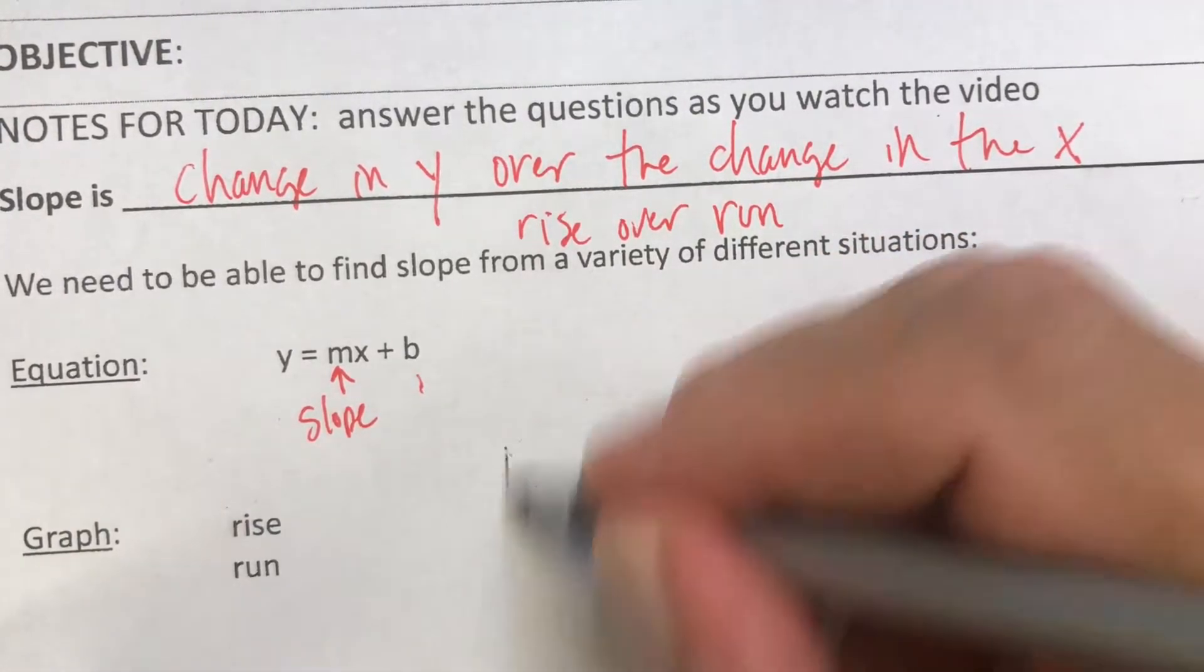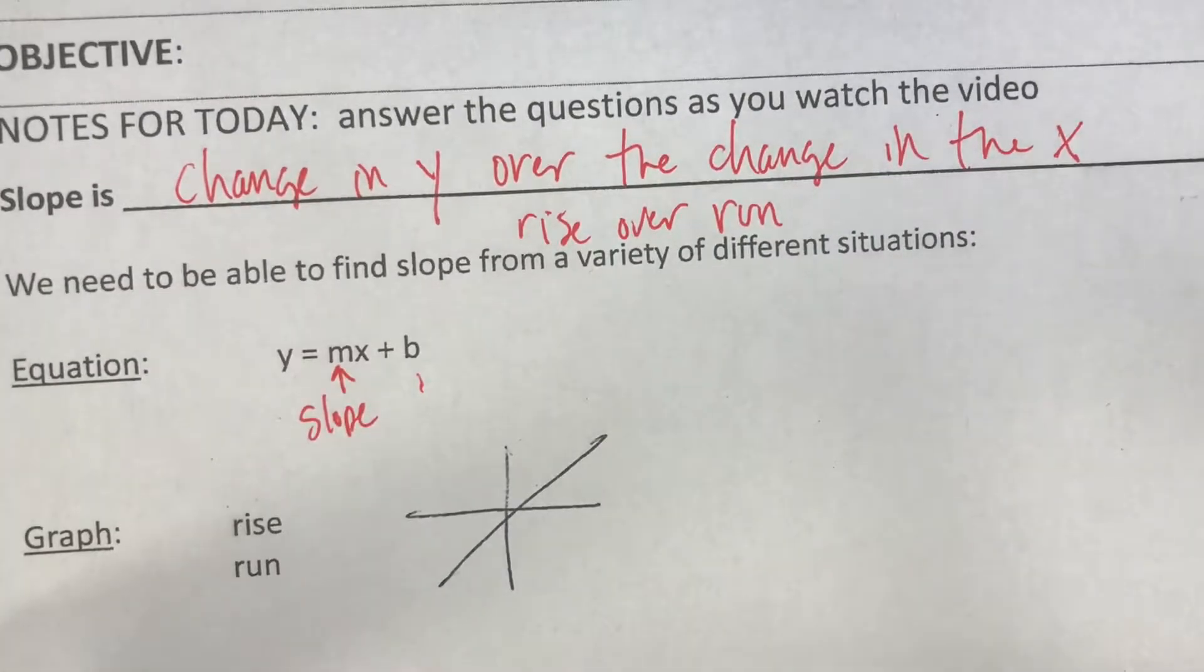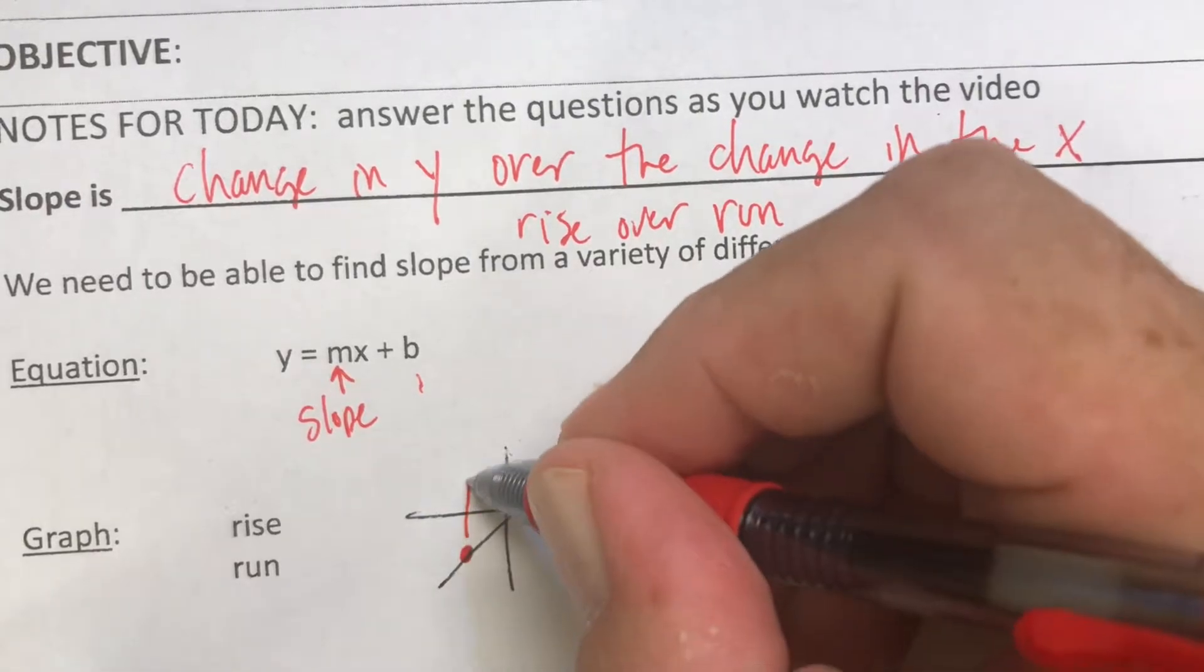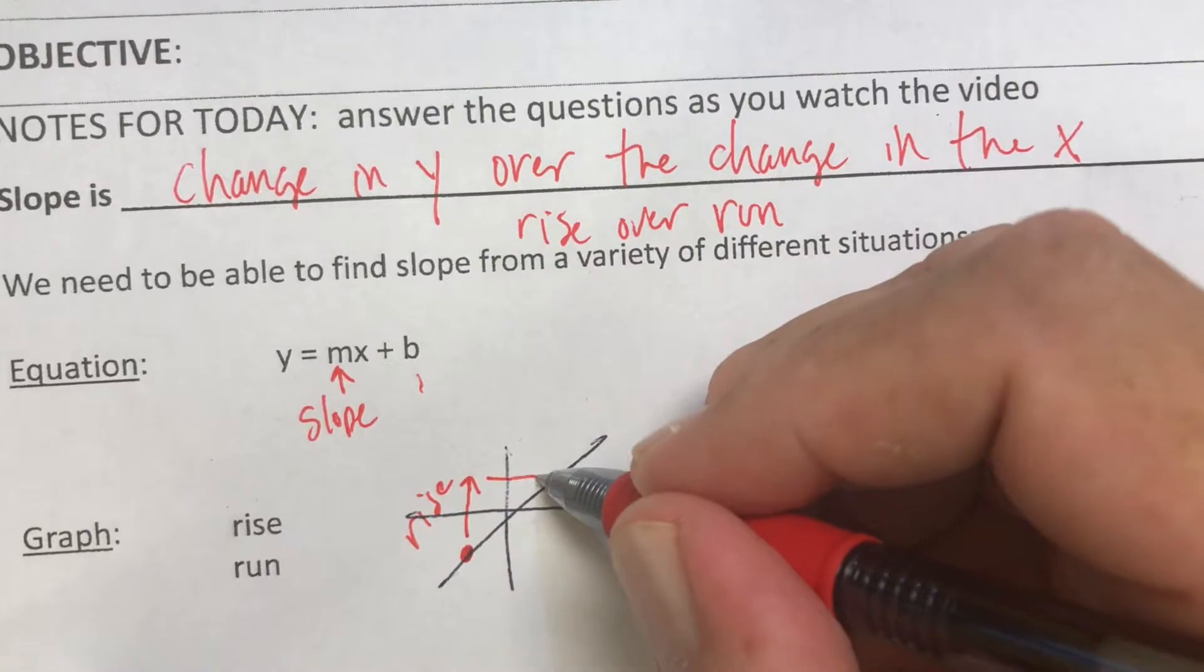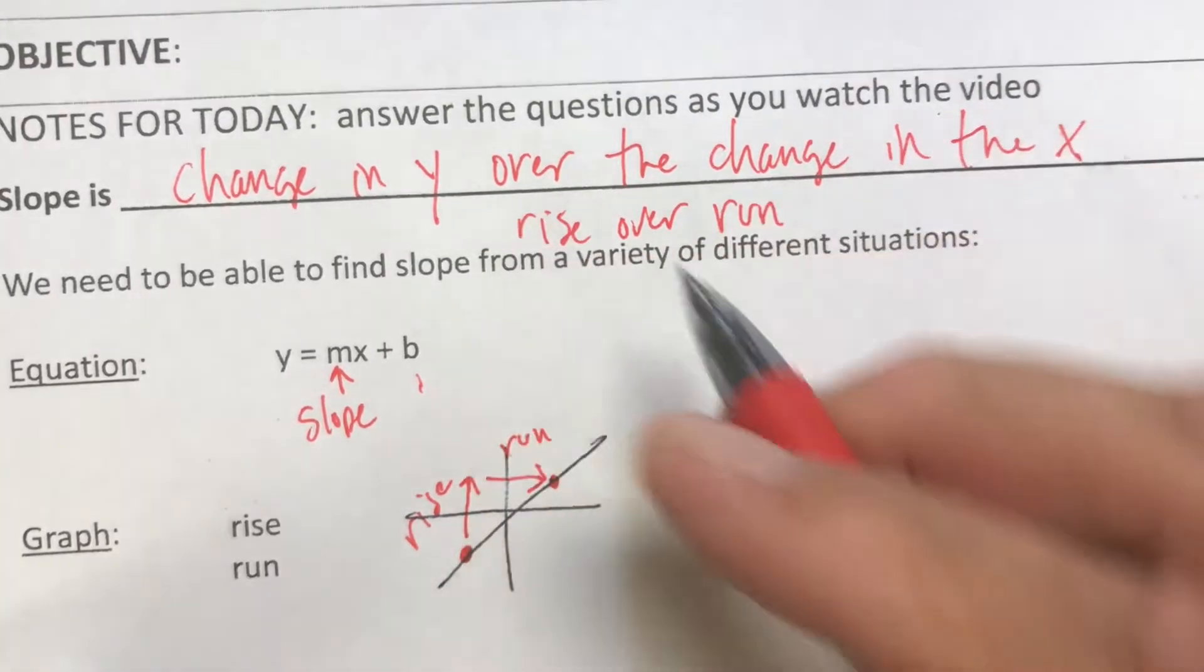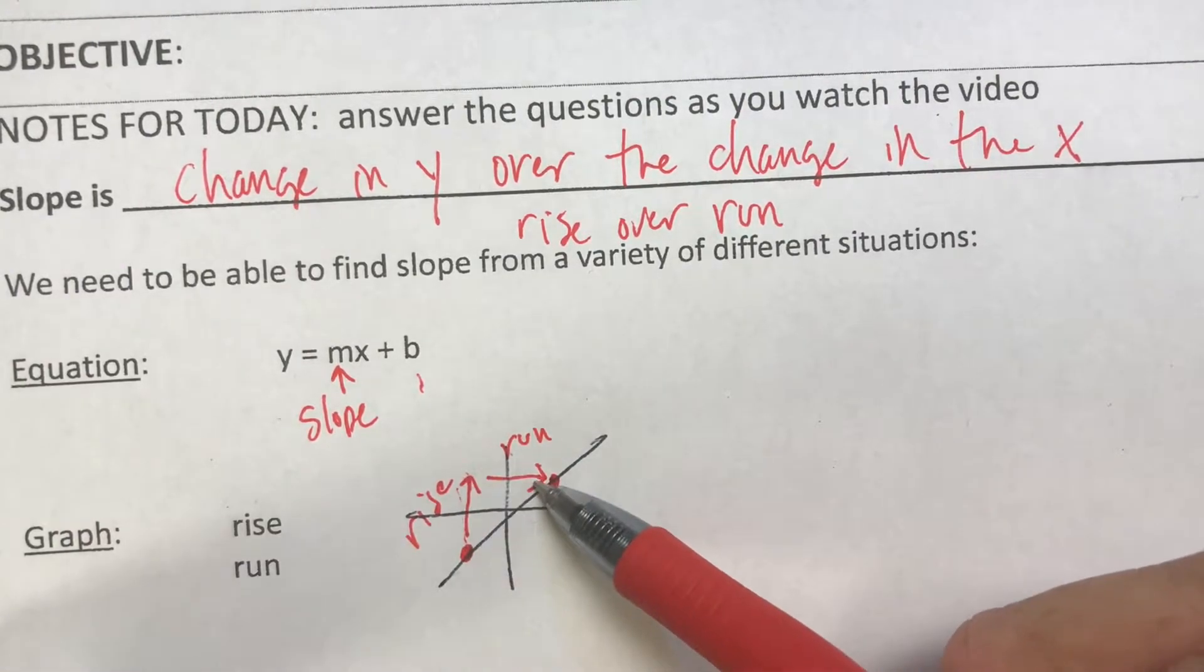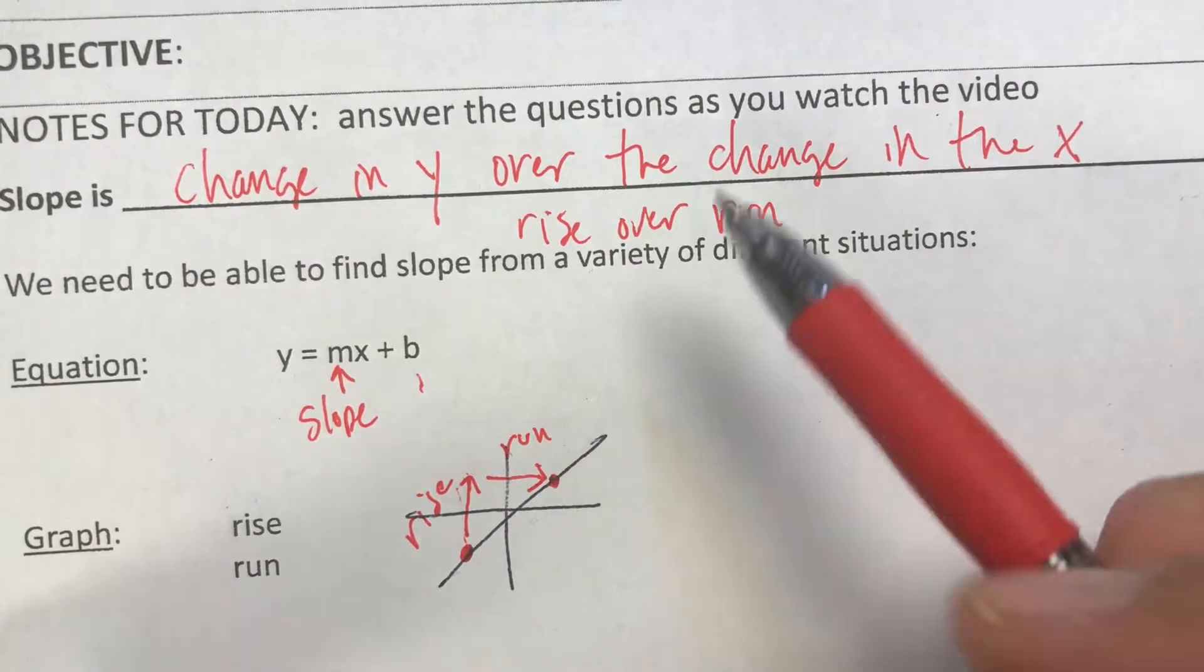The graph is the rise over the run. So if we just drew a little line to illustrate, how we go from one point - how we go up is the rise, and how we go over to get to the next point is the run. That ratio, every time we go up this many and go over that many, represents the slope. Doesn't matter where on the line we're doing it, we're going to get the same slope.